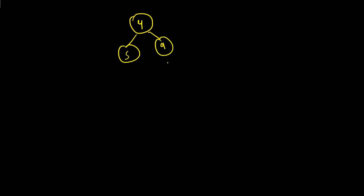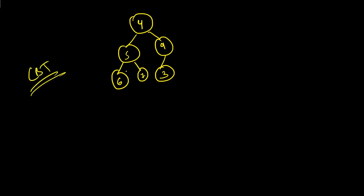Let's discuss how the heapify algorithm works. Say we have a tree: [4, 5, 9, 3, 6, 7] — a complete binary tree. We have to convert this into a max heap using the heapify algorithm. Heapify doesn't consider leaf nodes because leaf nodes already satisfy the max heap criteria. The implementation starts from the last non-leaf node. In this tree, that is the node with value 9.